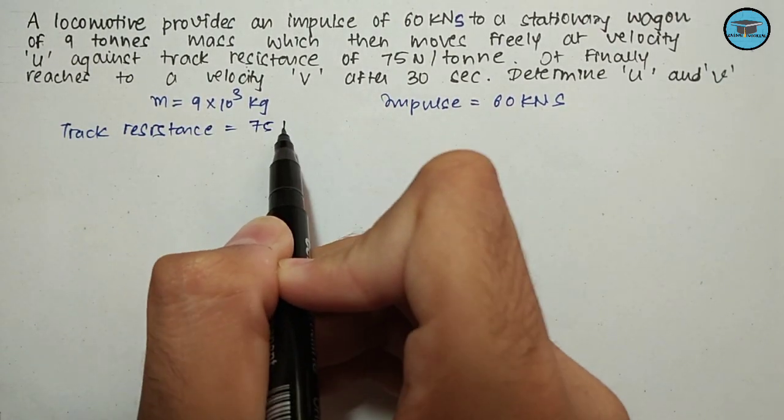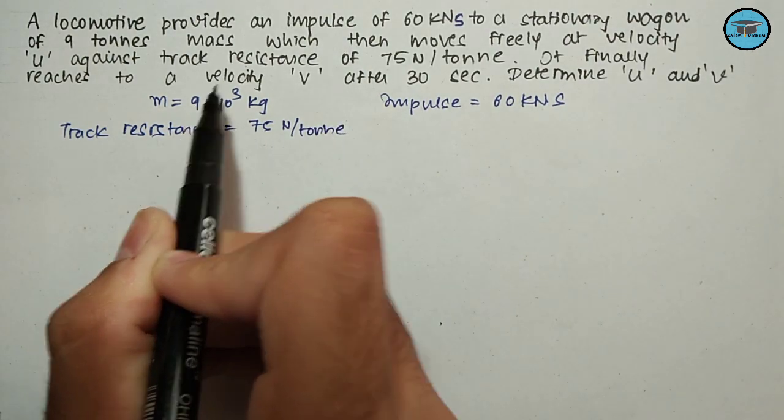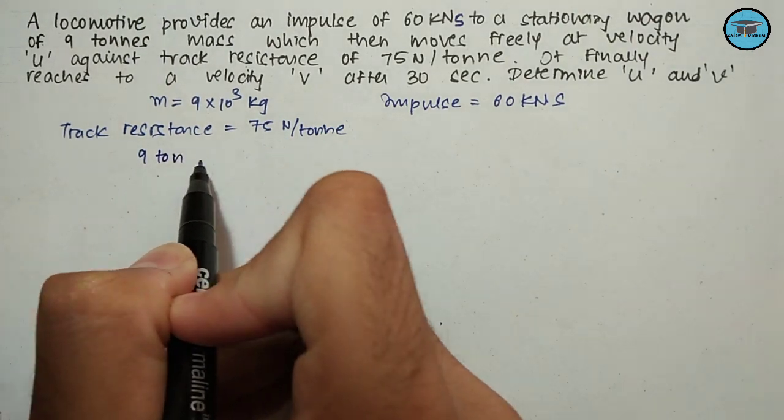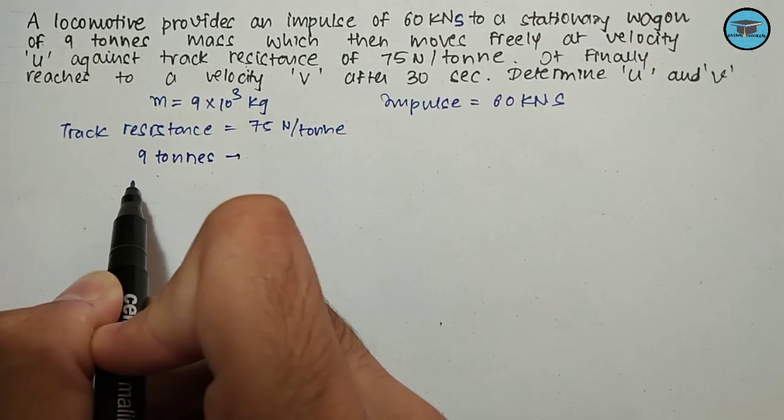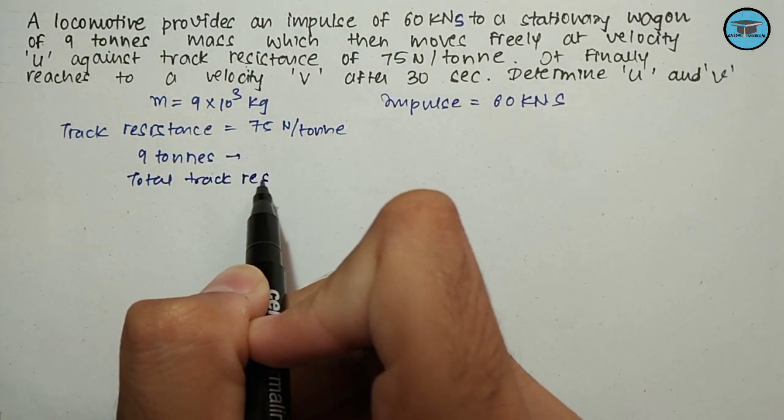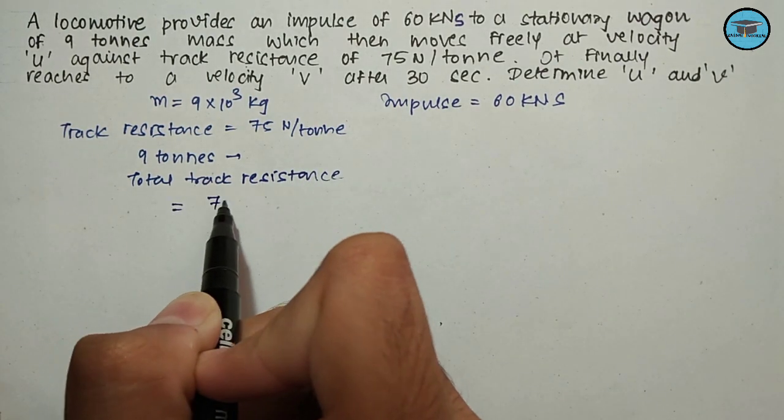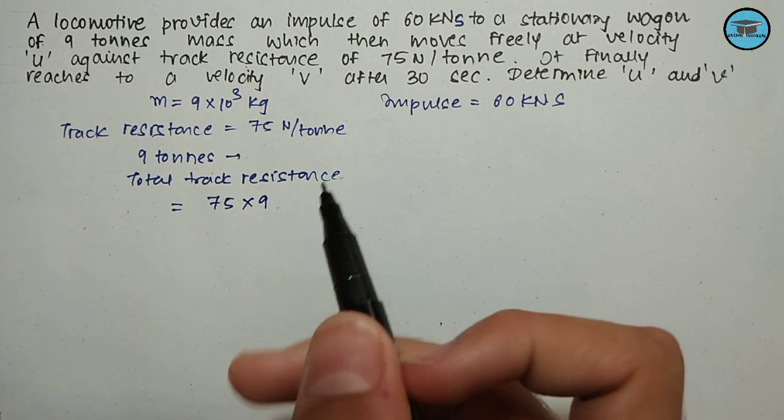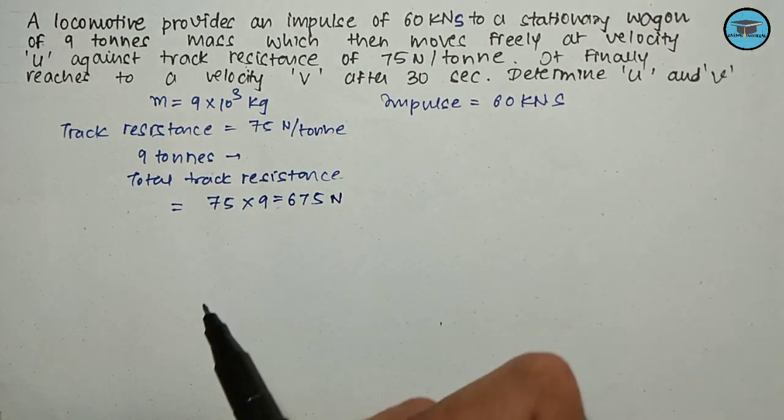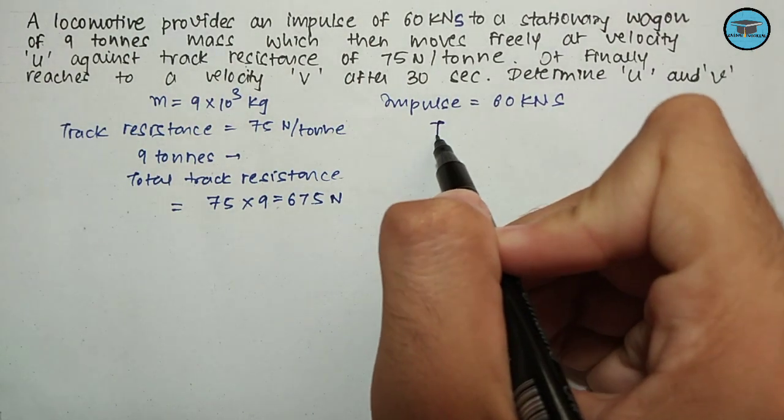For 9 tons, that is the mass of this stationary wagon, the total track resistance will be 75 × 9, which equals 675 Newton.